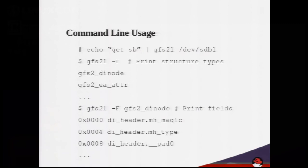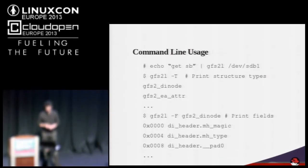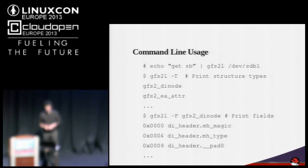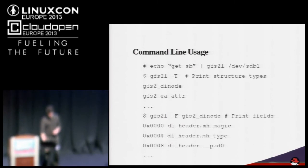Here are some examples of command line usage. You can easily incorporate GFS2L into a pipeline — just echo a script into it. You can use the minus-T option to print all the data types at your disposal, and minus-F to print all the fields in a data type with their offsets. That would be useful for tab completion scripts, for example.